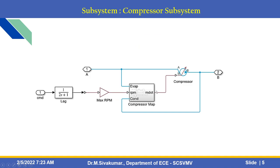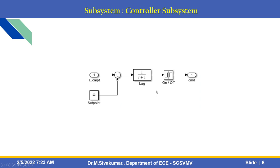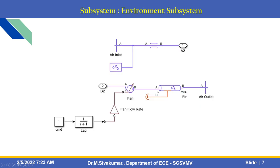This is the compressor subsystem, which uses a lag compensator. This is the controller subsystem. The environmental subsystem has air inlet, air outlet, and fan flow rate through this pipe.